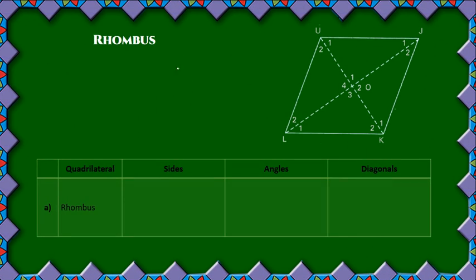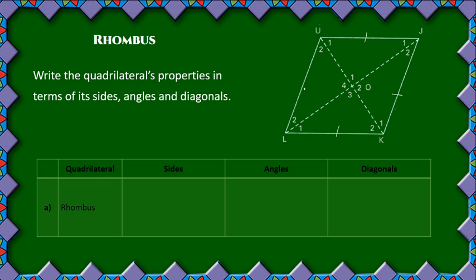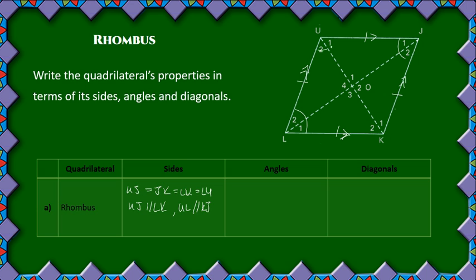And then we have the rhombus. For the rhombus, all sides are equal, and the opposite pairs are parallel. So UJ is equal to JK, which is equal to LK, which is equal to LU. For the opposite pairs: UJ is parallel to LK, and UL is parallel to KJ. For the angles, the opposite angles are equal: angle ULK is equal to angle UJK.